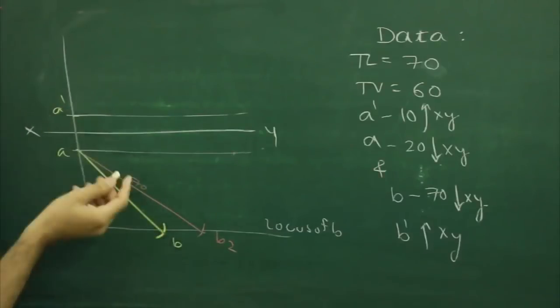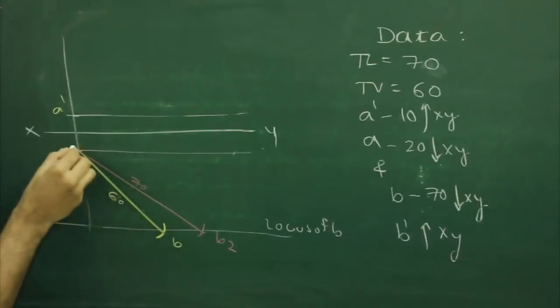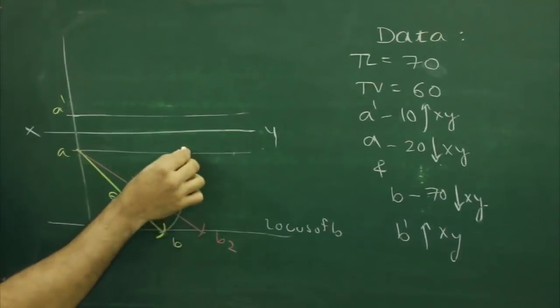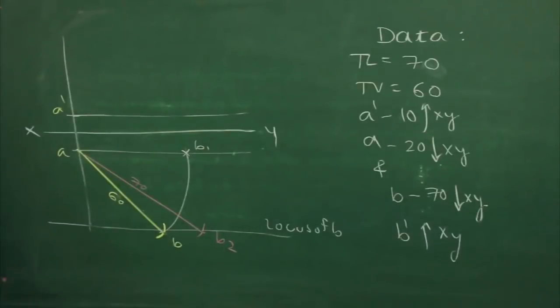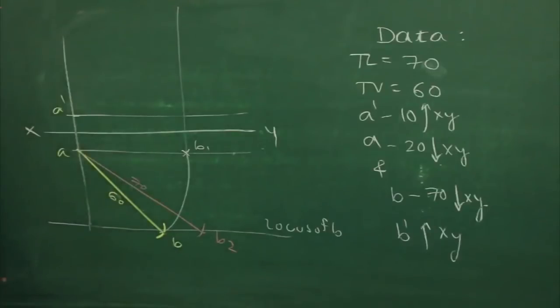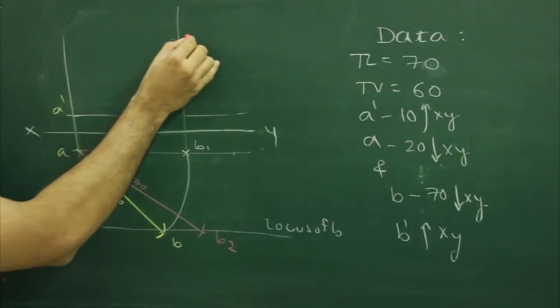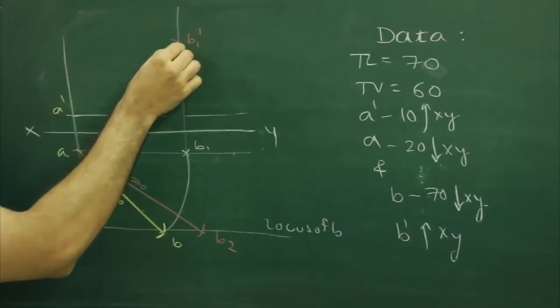After that, we will rotate AB top view, keeping point A fixed, take A to B1, and we will rotate till here to get point B1. We will project straight, but we do not know where to start. But we know the true length is 70, so from here A' we can cut 70 on this to get B1 dash.